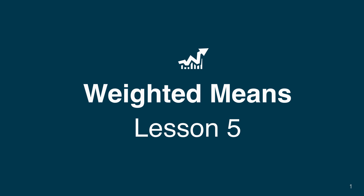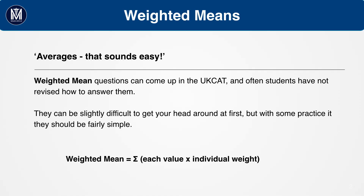This is a topic which many students have not tackled before, but it can come up from time to time in the UKCAT. When you hear 'means', don't assume that it is easy. Simple means are, but weighted means can be a tad tricky. They can be slightly difficult to get your head around at first, but with some practice it should be fairly simple. The formula for weighted means is the sum of each individual value times its individual weight. This might seem quite abstract for now, but we'll go through what this formula means in the future slides.